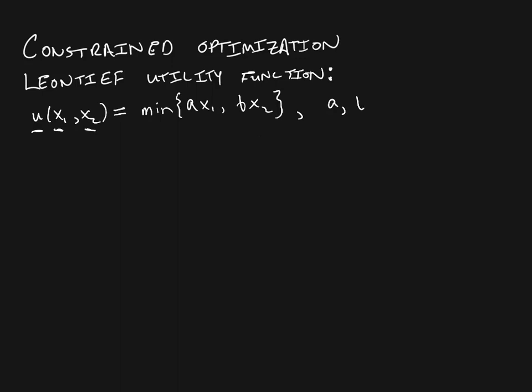A and B here are both strictly positive real numbers. When you have this kind of utility function, what you really care about is the smallest amount of either AX1 or BX2, because utility is going to be the minimum of these two.